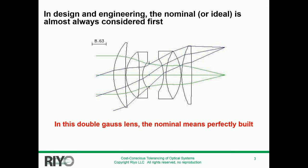The nominal or ideal — you might hear that kind of terminology — is essentially what you have on paper for your design, and it's almost always considered first. Nowadays it's very common to consider whether something is going to be buildable or not. This class talks about not only how you might assign tolerances, but how you evaluate different designs. I tend to use passive lens optical systems as examples — such as this old 35mm format double gauss type of design — where nominal simply means the on-paper or perfectly built system.